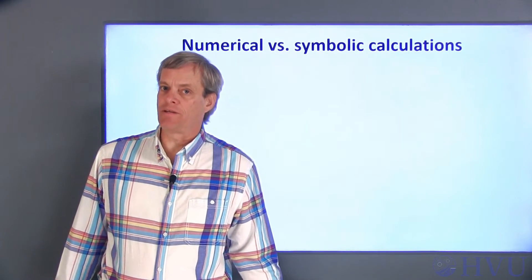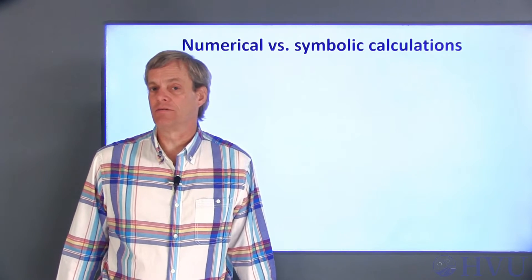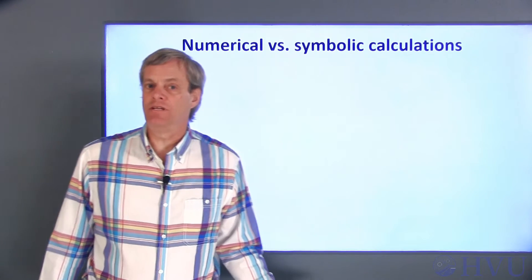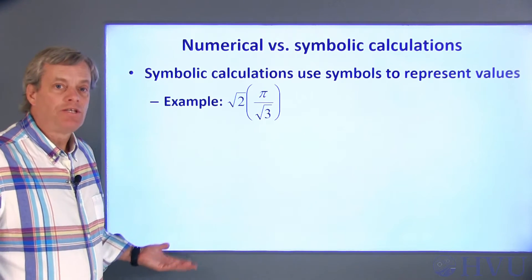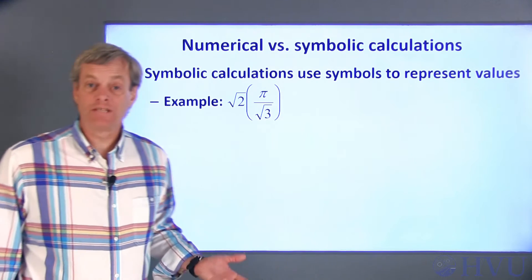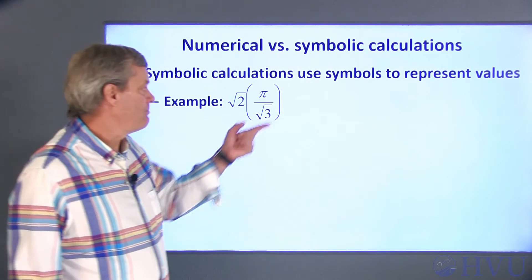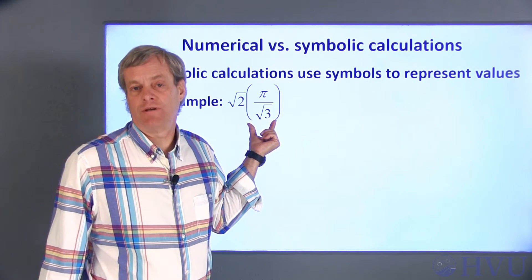First, I'll talk a little bit about the fundamental difference between numerical and symbolic calculations. It's pretty obvious, but you need to really keep the difference in mind. Symbolic calculations include symbols as well as numerical values. For example, a symbolic expression might be the square root of 2 times pi divided by the square root of 3.